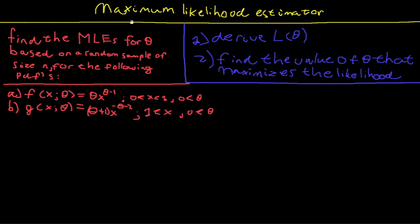Hello guys, the Acomptition here, and this is basically a follow-up on my videos regarding the maximum likelihood estimator. In this video I want to go through two examples. The question is: find the maximum likelihood estimators for theta based on a random sample of size N for the following PDFs. For the first example I will estimate theta for the first PDF, and for the second example I will use the second PDF.